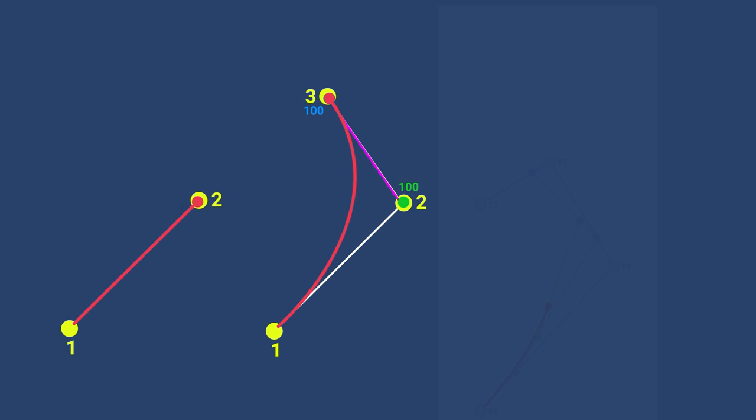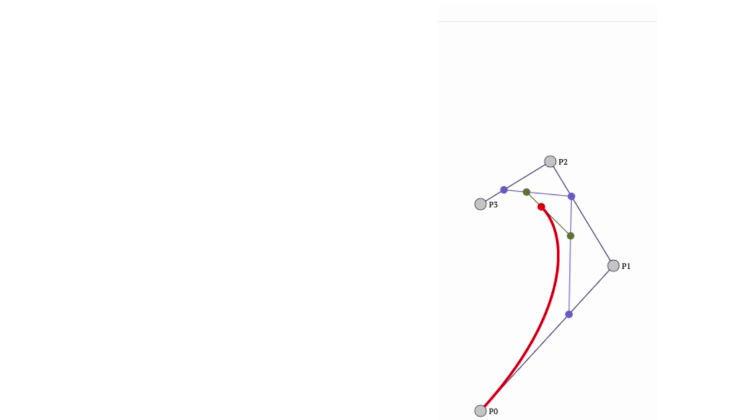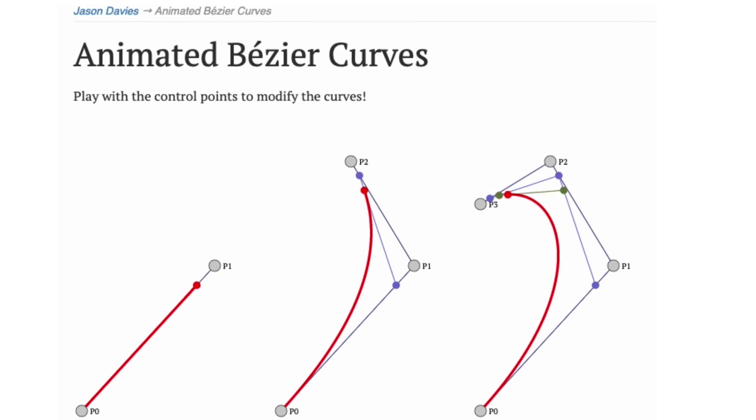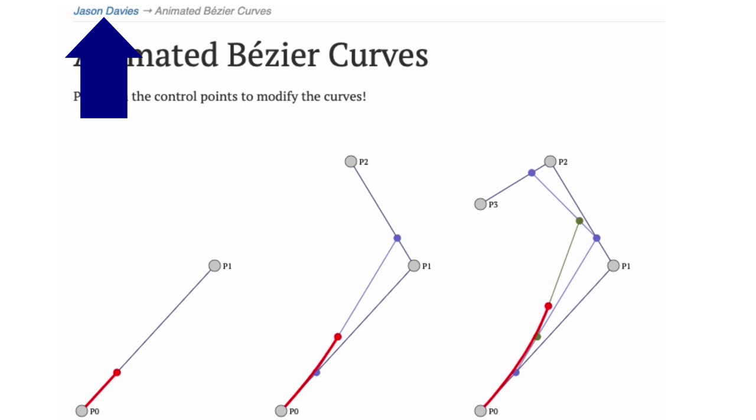Then for a cubic Bezier, you need four control points with a bunch of other connecting points and lines that follow. This then continues to higher order curves, which I won't show, and it does just take watching these a few times to see how they work. Credit to Jason Davies for coding this, by the way. Very useful.